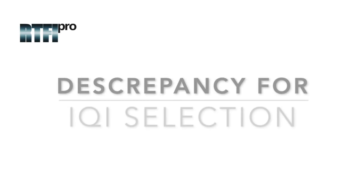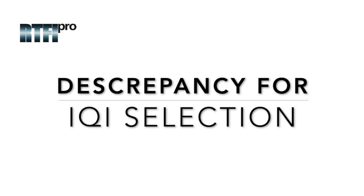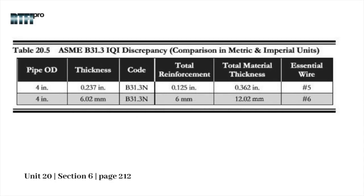First, I will go over the discrepancy for IQI selection, and then I will go over the discrepancy for rounded indications. For IQI selection, the difference between metric and imperial is as follows. With ASME, there can be differences in IQI selection depending on whether we're using metric or imperial reinforcement. This is mainly due to the reinforcement not being equal between both units.